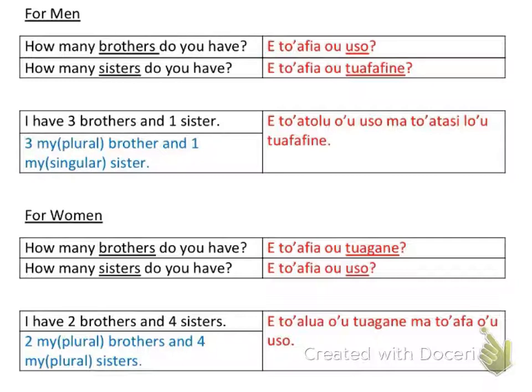When you're talking about an amount of people, you have to indicate that you're including people. So that's why I add 'toa' right before 'fia.' If I just wanted to say how many drinks of soda did you have today, I'd say 'a fia.' But if you're including an amount of people — like how many brothers and sisters, or how many people work for you — you say 'a toa fia.'